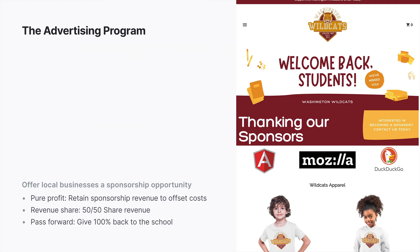You can launch an online store using Inksoft and do a simple banner or hero space image thanking sponsors. You can position their logos using custom content and call out key information about that business. Maybe they want to promote their lunch special for students using a coupon code so they can track performance. If you go to a small local business and say we're going to give you four social media mentions, inclusion in four emails, and presence on the Spiritware fundraising store — that's an awful lot of value, impressions, and goodwill generation.